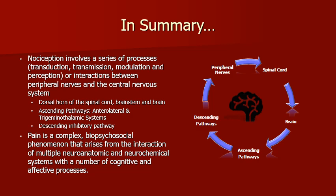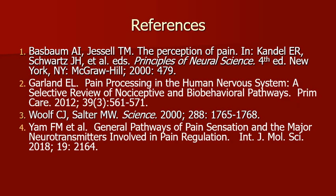In summary, nociception involves a series of processes — transduction, transmission, modulation, and perception — representing interactions between peripheral nerves and the central nervous system. Pain is a complex biopsychosocial phenomenon that arises from the interaction of multiple neuroanatomic and neurochemical systems with a number of cognitive and affective processes. Whether linked with injured tissue, inflammation, or functional impairment, pain is mediated by processing in the nervous system and is associated with a variety of emotional reactions and behaviors. Thus, pain is fundamentally a psychophysiological phenomenon. This concludes Part 1 of Ascending and Descending Control of Pain.